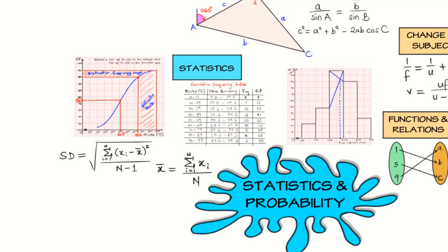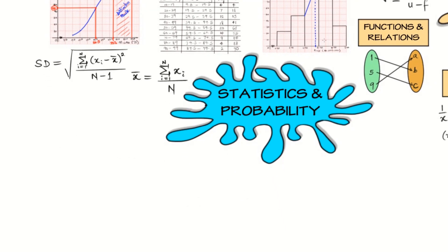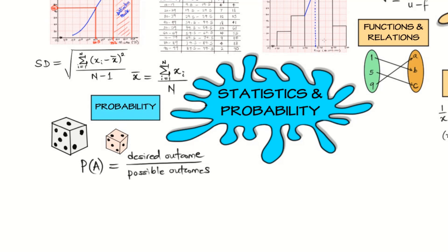Then measures of dispersion. We need to know the mean deviation, standard deviation, the variance, and so on. And then under probability, we need to know experimental and theoretical probability. What's the probability of getting a head when a coin is tossed? What's the probability of getting a six when a die is thrown? Then the addition and multiplication of probabilities for independent events, and then exclusive and independent events.